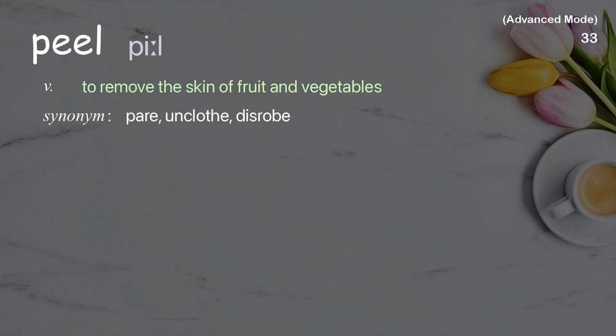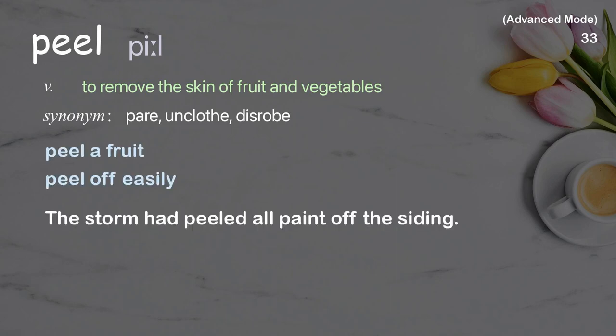Peel: to remove the skin of fruit and vegetables. Examples: peel a fruit, peel off easily. The storm had peeled all paint off the siding.